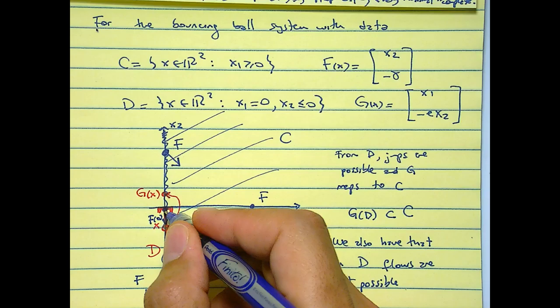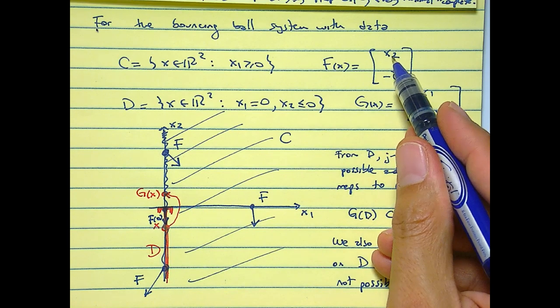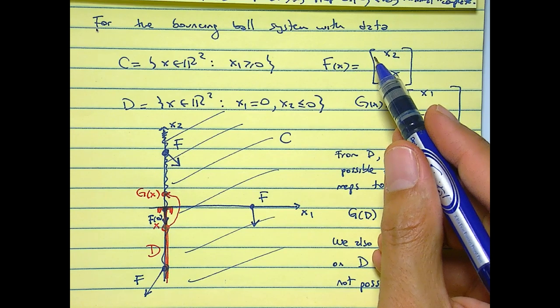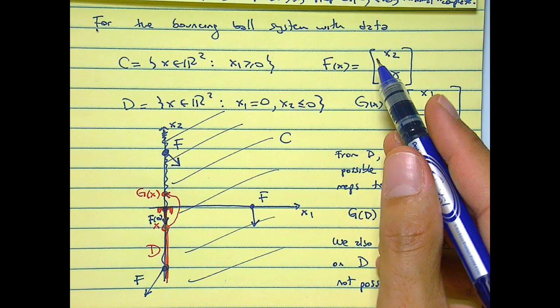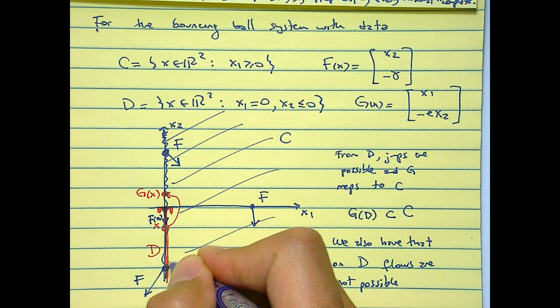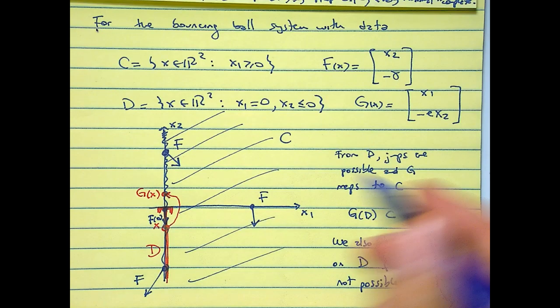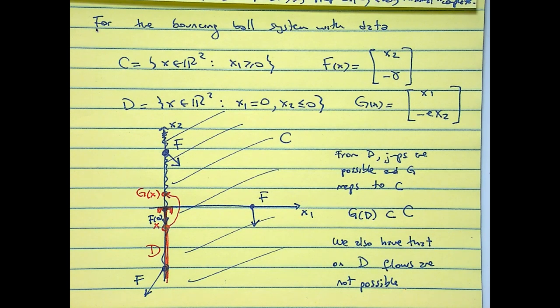As we did before, from D jumps are possible and G maps to C, so we have G on D is containing C. We also have that on D flows are not possible. The reason is that no matter where you are in D, the vector field will push you away from C.